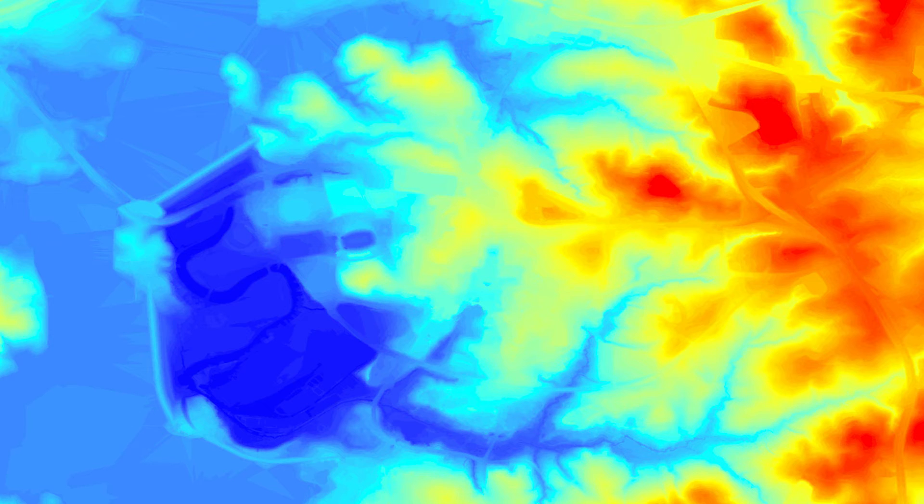This is a model of the Clemson area, where red represents high ground and blue represents low ground. The elevation of each point is saved in a digital elevation model file.